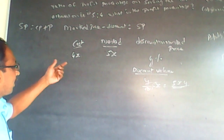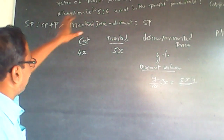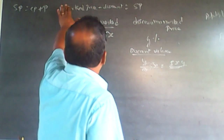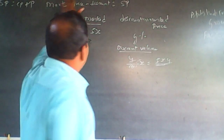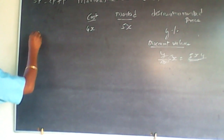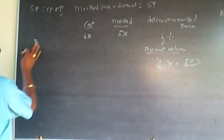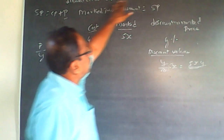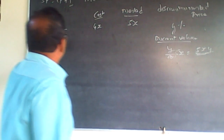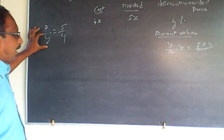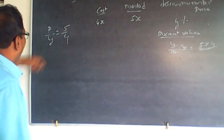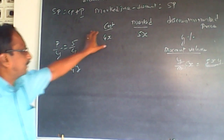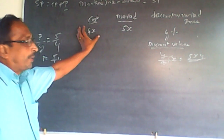Here it says profit percentage on selling the article to discount percentage is 5 to 4. So P divided by Y equals 5 by 4, which means profit percentage P will be equal to 5 by 4 of Y. I will calculate 5 by 4 of Y percentage on 4x to get the profit value.